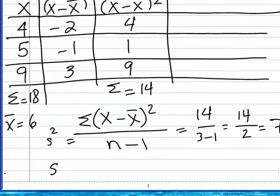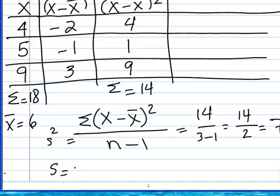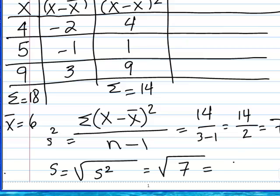Then the standard deviation would be the square root of the sample variance, which is the square root of 7, which in this case would be 2.65.